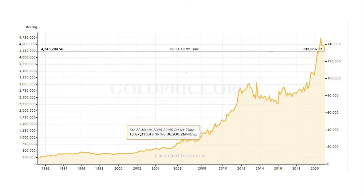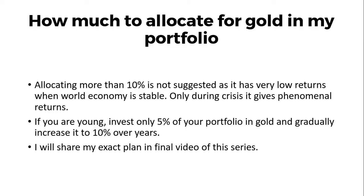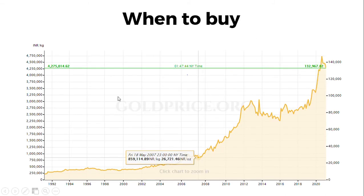Gold delivers good returns only during crises, so allocating more than 10% of your portfolio is not suggested. If you're young, invest only 5% in gold because if markets crash you have time for your investment to recover. You can gradually increase your gold allocation to 10% over the years. For timing, it's difficult to time gold, so it's better to do a mutual fund SIP every month, keep accumulating, and sell when prices are very high.